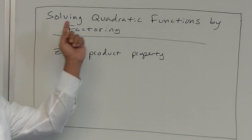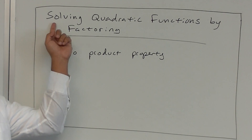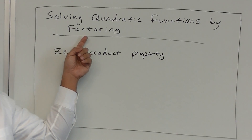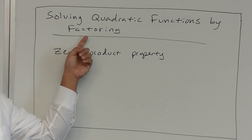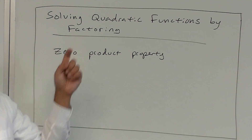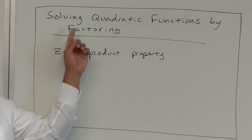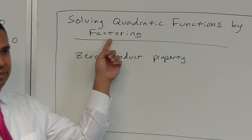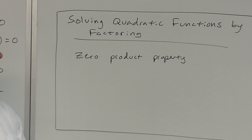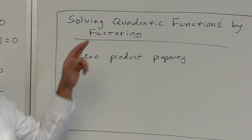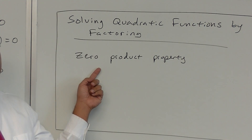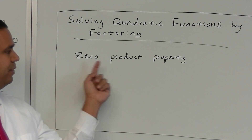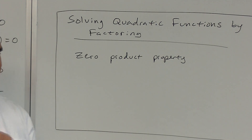Alright, today we're going to learn how to solve quadratic functions by factoring. Yesterday we already covered how to solve these by finding a square root, so now we're going to solve by factoring. Before we get into that, I have to show you or remind you of what the zero product property is.